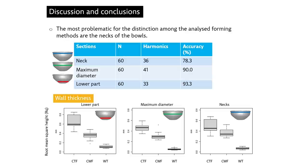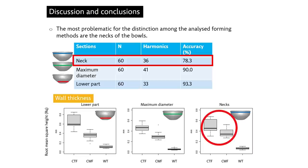The most problematic for distinction among the analyzed forming methods are the necks of the bowls. The automatic classification showed low accuracy for the neck sections compared to other parts. Looking at wall thickness analysis distinguished by vessel part, the variability of wall thickness of samples manufactured using coiling with potter's wheel finishing is closer to those of coiling with turntable finishing in the case of the necks. The preliminary explanation is that the more complex shape of the neck prevents efficient use of continuous pressure to regularize wall thickness.